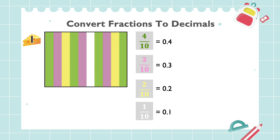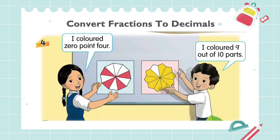Next example. The girl says, "I colored 0.4." The boy says, "I colored 9 out of 10 parts." As we can see, the girl is holding a diagram that has 10 parts. 4 parts is shaded, so the decimal for shaded part is 0.4. This diagram has 10 parts.